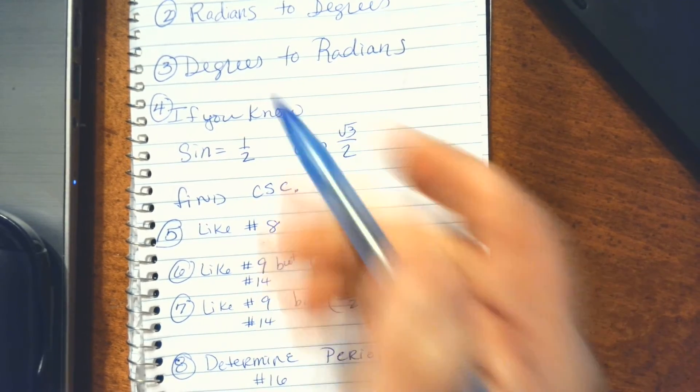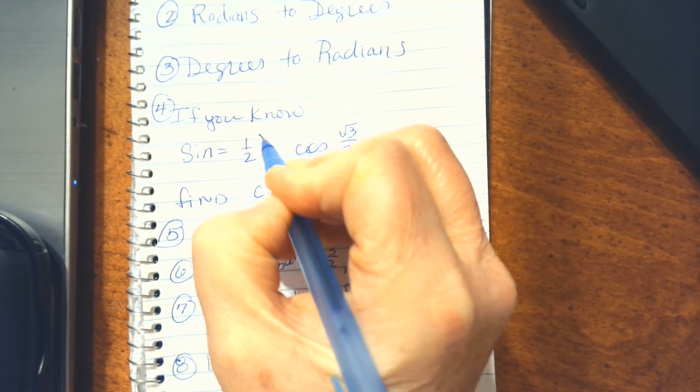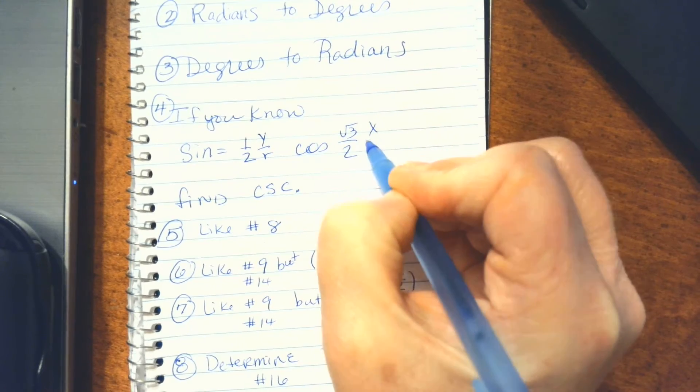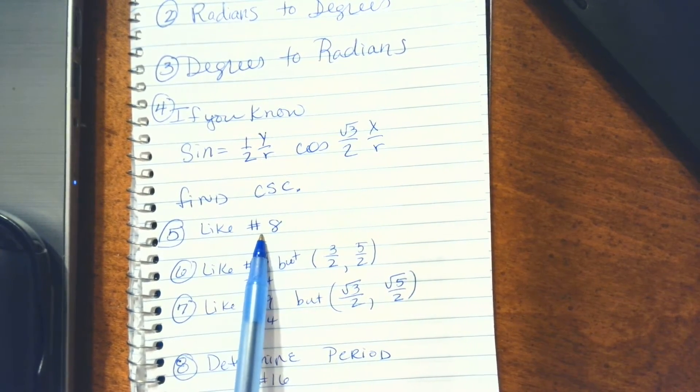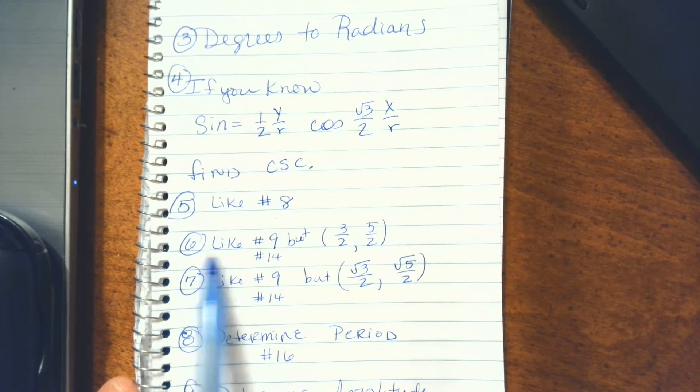If you know the sine and the cosine, you're going to have to find the cosecant. Remember that this is y over r and this is x over r, and go from there.